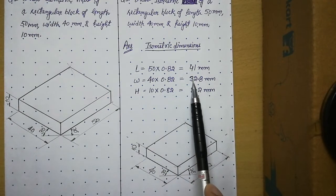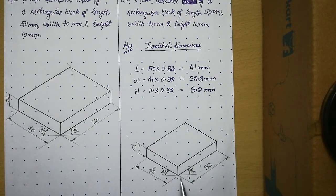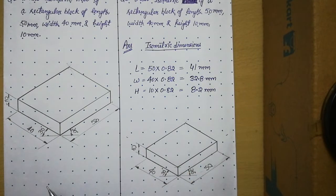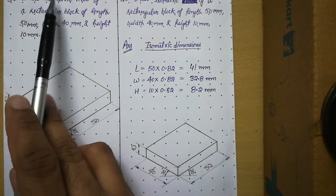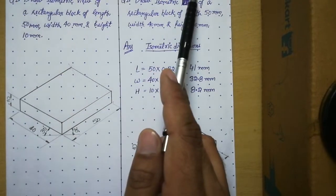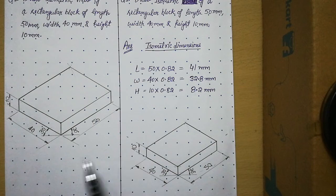Then use these reduced dimensions in the drawing. But when you have to place the dimensions, you will write original dimensions only. I hope you have understood how to draw isometric view and isometric projection for any particular solid. Thank you very much.